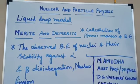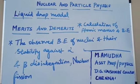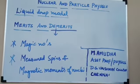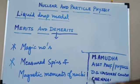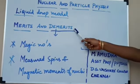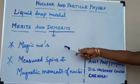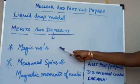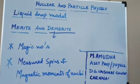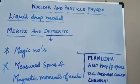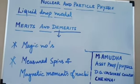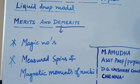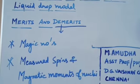Coming to the demerits of the liquid drop model: the liquid drop model fails to explain the magic numbers and their stability towards the nuclei. The second demerit is that the measured spins and magnetic moment of nuclei cannot be explained by the liquid drop model.